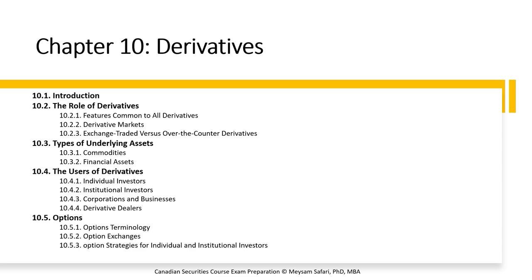Option strategies for individual and institutional investors: the range and complexity of options trading strategies are practically limitless. We will examine 8 option strategies commonly used by individual and institutional investors. Each strategy is either speculative or a risk management strategy based on exchange-traded options on shares of the fictitious company XYZ Inc. For all strategies presented, assume we are currently in the month of June and that XYZ Inc. stock is trading at $52.50 per share. The discussion makes use of one of four options listed in Table 10.4.